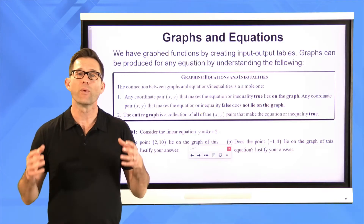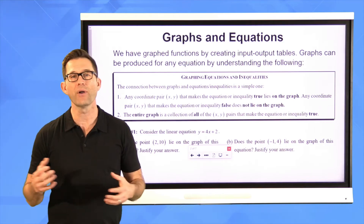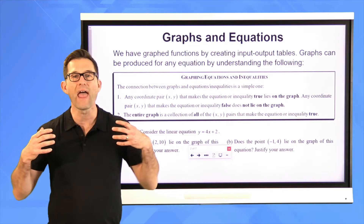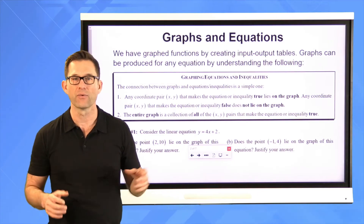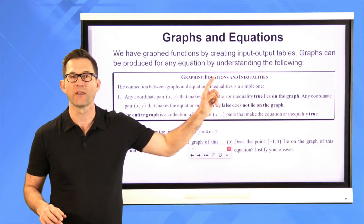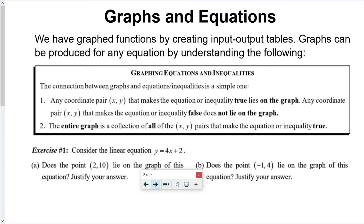Graphs and equations. We've graphed functions by creating input-output tables. Graphs can be produced for any equation by understanding the following. The connection between graphs and equations and inequalities is a simple one: any coordinate pair (x, y) that makes the equation or inequality true lies on the graph, and any coordinate point (x, y) that makes it false does not lie on the graph. The entire graph is the collection of all the x,y pairs that make the equation or inequality true.